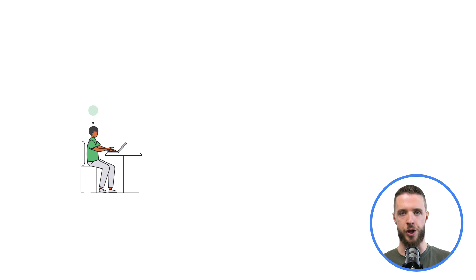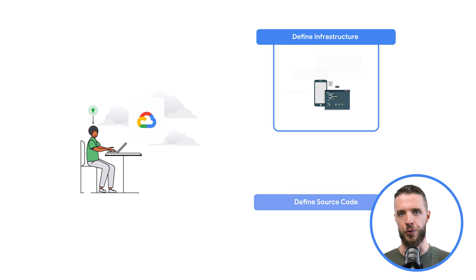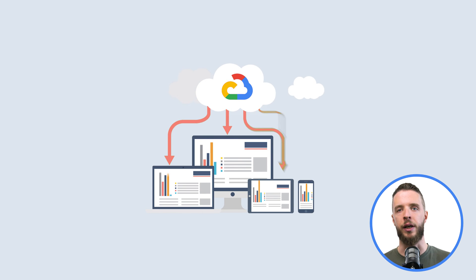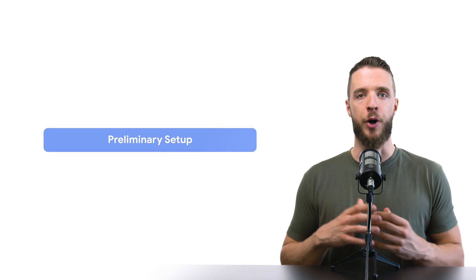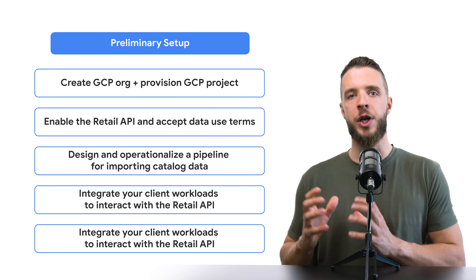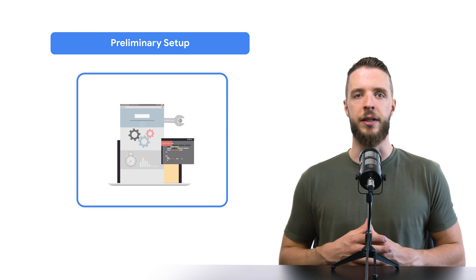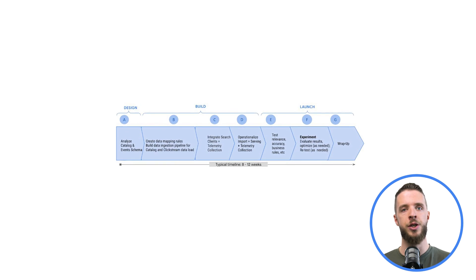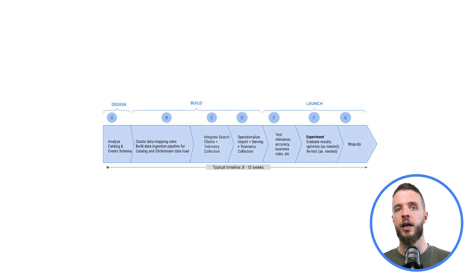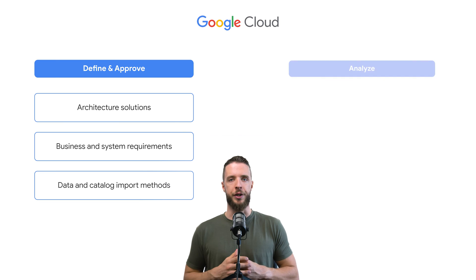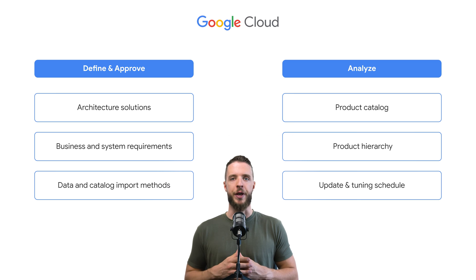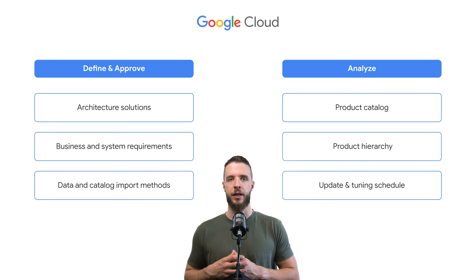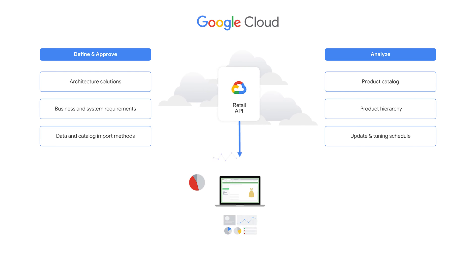To implement Discovery Solutions, you should define the infrastructure and the source code, and understand what must be requested and how to get working instances that can serve traffic. The preliminary setup requires only managerial steps with no work on the development side. The whole deployment process, starting with the design phase and resulting in a launch, takes anywhere from 8 to 12 weeks depending on your solution complexity. During this time, you define and approve the architecture, solution requirements, and importing methods. Next, you implement and operationalize the data import processes for product catalog and user event data, and finally integrate your application workloads with the Retail API.